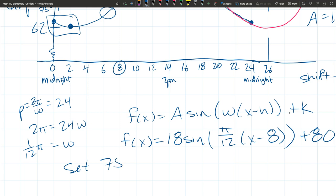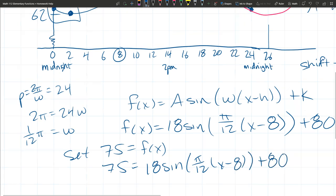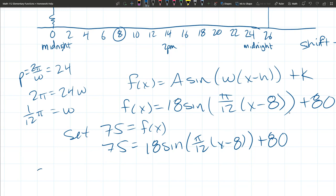So we need to figure out where do we hit 75 degrees. So again, 75 is a y value. So we're going to set 75 equal to f of x. So we got 75 equals 18 sin(π/12(x-8)) + 80. And now you need to solve for x.